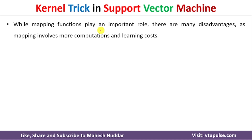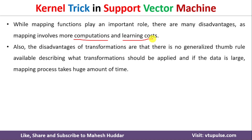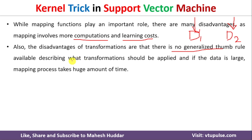The mapping function plays a very important role when transforming a dataset from input space to feature space. But these mapping functions have many disadvantages — computational cost and learning cost. Most importantly, there is no generalized rule for what transformation should be applied for a given dataset. For example, whatever transformation you apply on dataset D1 may not work on D2 — there is no generalized rule, and for each dataset we get different mapping functions.